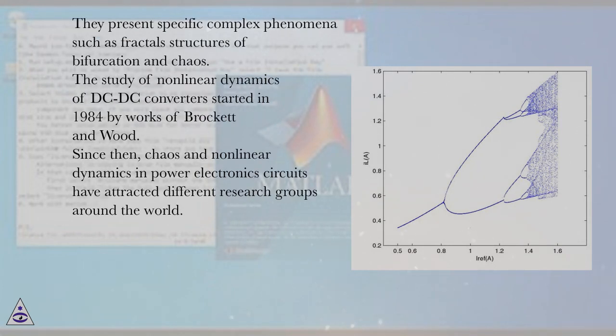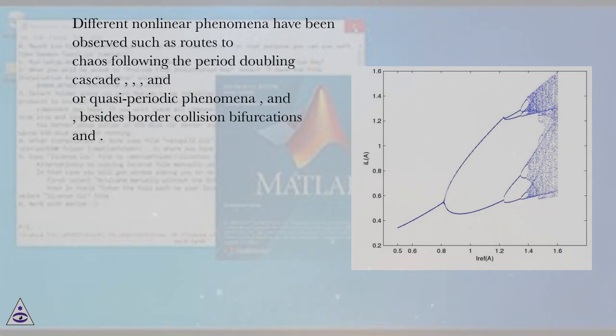They present specific complex phenomena such as fractal structures of bifurcation and chaos. The study of nonlinear dynamics of DC-DC converters started in 1984 by works of Brockett and Wood. Since then, chaos and nonlinear dynamics in power electronics circuits have attracted different research groups around the world. Different nonlinear phenomena have been observed such as routes to chaos following the period doubling cascade, and quasi-periodic phenomena, and border collision bifurcations.